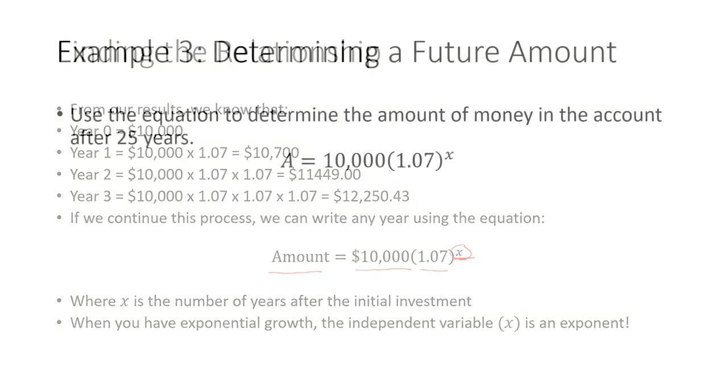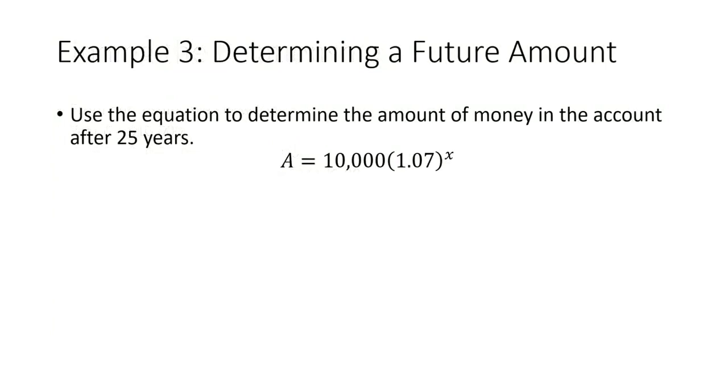So let's use this equation to determine the amount of money we would have after 25 years. You're going to need a calculator for this. The amount at a later time is going to be $10,000 times 1.07 to the 25th power. When you plug this into your calculator, you should get $54,274.33.